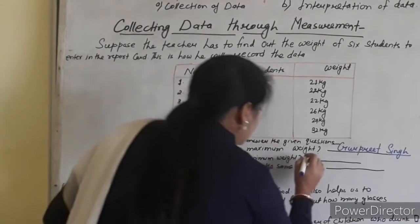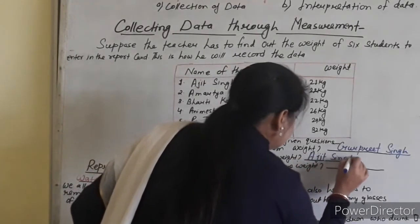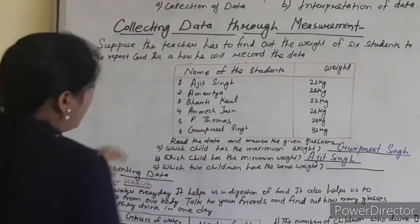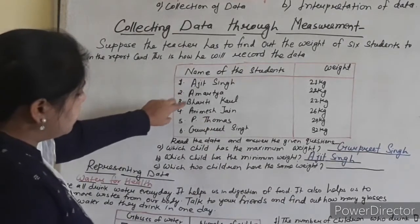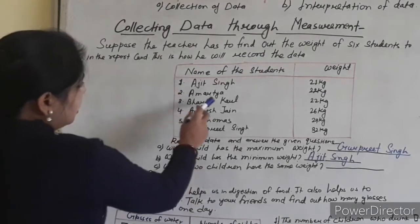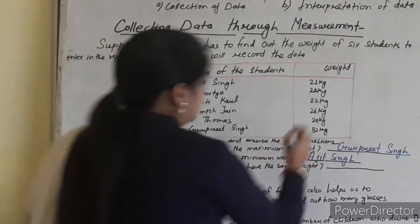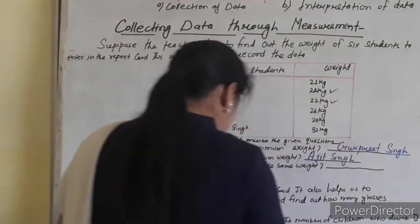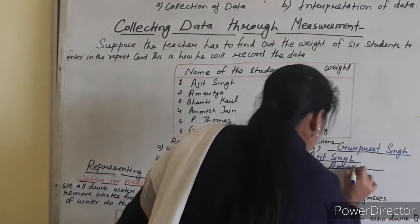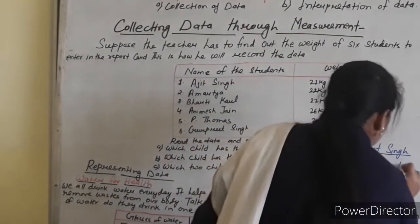Write: Ajit Singh. Then number C: which two children have the same weight? You have to write the names of the students whose weight is the same. The two students are Amatya, 22 kg, and Bharti Kaur, 22 kg. Write Amatya and Bharti Kaur.